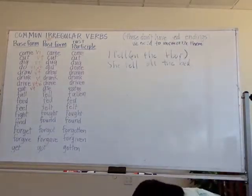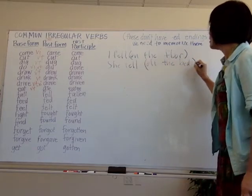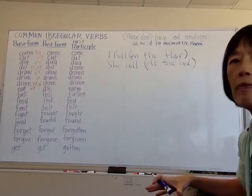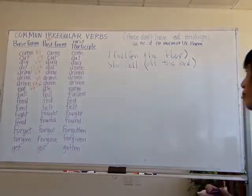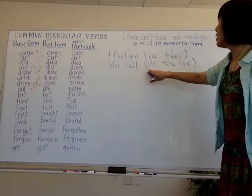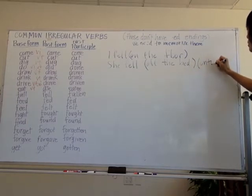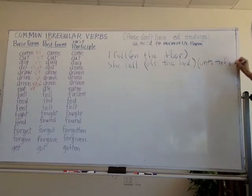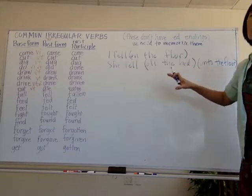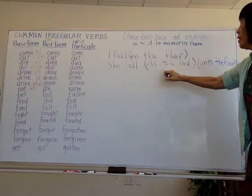So 'on' tells where you ended up, and 'off' tells the place you fell from. You could also say 'she fell off the bed onto the floor,' showing both where she started and where she ended. So it's possible to show with 'fall' where the ending is, where the beginning is, or both.